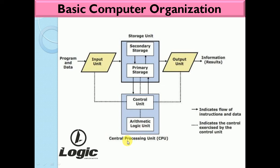The central processing unit is mainly divided into three units: the arithmetic and logic unit, the control unit, and the storage unit. And this is the output unit, which gives the result or information to the user. These are the basic operations of the computer system.